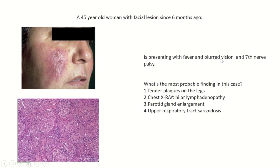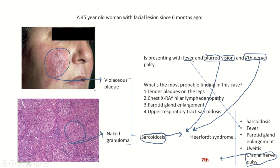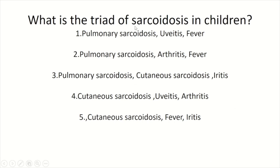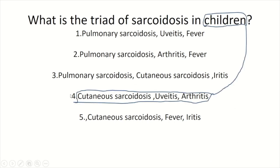A 45-year-old woman with facial lesions since six months ago presents with fever, blurred vision, and seventh nerve palsy. There is a violaceous plaque with histopathology showing a naked granuloma indicative of sarcoidosis. Heerfordt syndrome is a combination of sarcoidosis with fever, parotid gland enlargement, uveitis (presenting as blurred vision), and cranial nerve palsy — mainly seventh nerve palsy. The correct answer is parotid gland enlargement. The last point: the triad of sarcoidosis in children includes cutaneous sarcoidosis, uveitis, and arthritis.